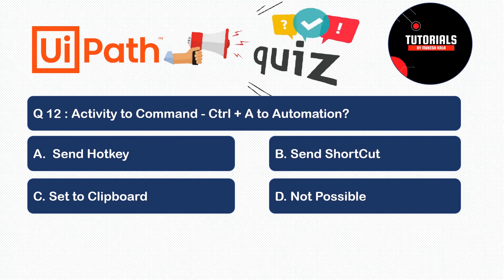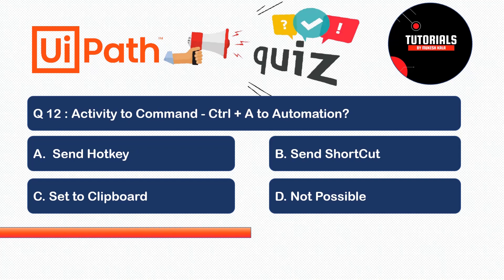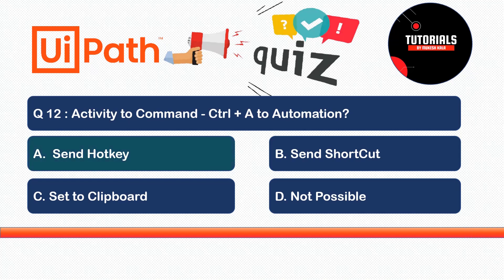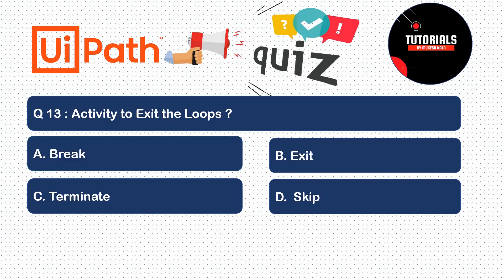Question 12: Which activity is used to send a keyboard command such as Ctrl+A, Ctrl+B, Shift+A, or Ctrl+Alt+Delete? Options: A) Send Hotkey, B) Send Shortcut, C) Set to Clipboard, or D) Not possible. The correct answer is Send Hotkey. Drag and drop this activity, select the modifier keys (Control, Alt, Shift) and the desired key from the dropdown, and the shortcut will be sent during automation.